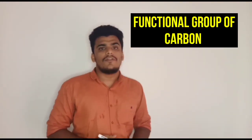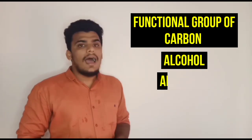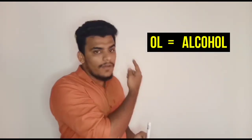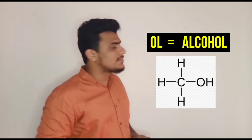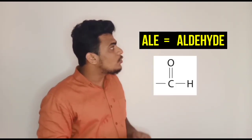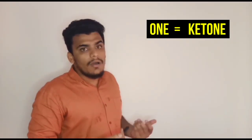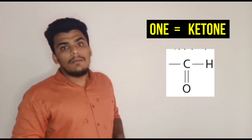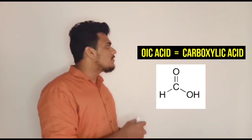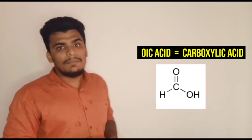The next topic is functional groups of carbon. Carbon has four functional groups: alcohol, aldehyde, ketone, and carboxylic acid. If a compound ends in -ol, it is in the alcohol group — one hydrogen is replaced by OH. If it ends in -al, it is an aldehyde — two hydrogens are replaced by a double-bond oxygen. If it ends in -one, it is a ketone — also two hydrogens replaced by double-bond oxygen. If it ends in -oic acid, it is a carboxylic acid — one hydrogen replaced by OH and two hydrogens replaced by double-bond oxygen.